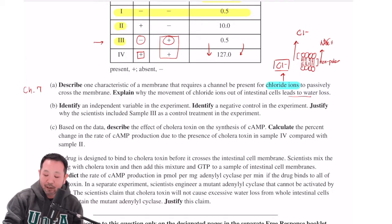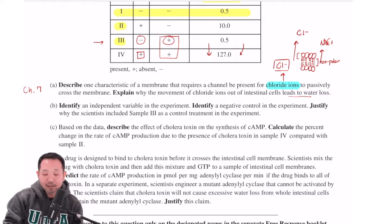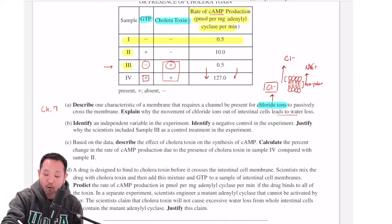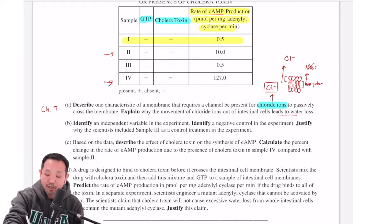C says, based on the data, describe the effect of the cholera toxin on the synthesis of cyclic AMP and calculate the percent change in the rate of cyclic AMP production due to the presence of cholera toxin in sample 4. Now, let's start with the first part. Based on the data, describe the effect of cholera toxin on the synthesis of cyclic AMP. Now, what we do here is going back to this table, we're really going to compare this sample 2 and this sample 4 because we want to make sure that both cells have GTP and the only difference is really with the presence of the cholera toxin. So in the description of this answer,